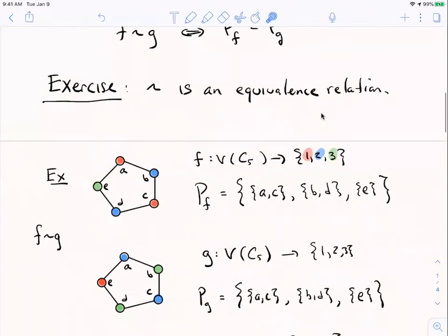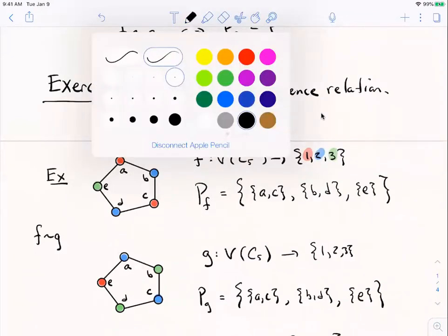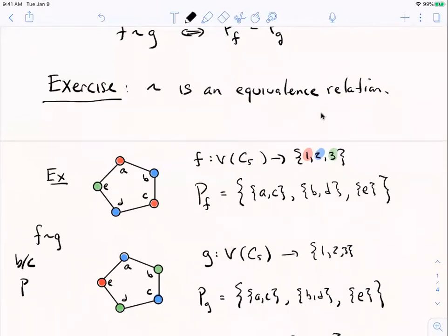So here's a different coloring. G is not the same coloring as F because, for example, G of A is 2, F of A is 1. That's a complicated way of saying that F colors the vertex A red and G colors the vertex A blue. So they're not the same coloring, but they're equivalent because the partition, if you look at the vertices that get the same color under G and the vertices that get the same color under F, they group the same. So P sub F and P sub G are the same, same partitions, so equivalent colorings.